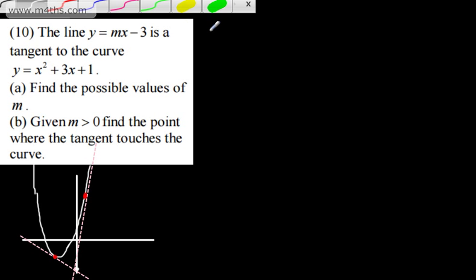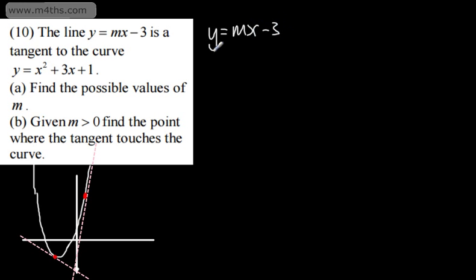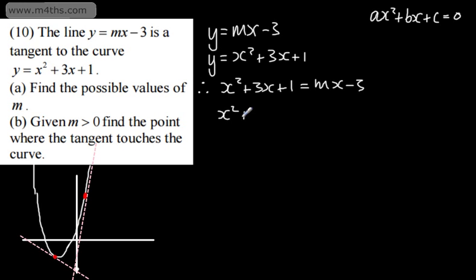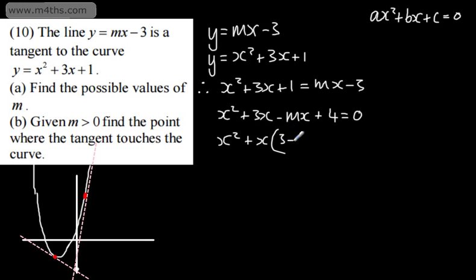I'm going to write y equals mx minus 3 and y equals x squared plus 3x plus 1. Therefore we can set these equal: x squared plus 3x plus 1 equals mx minus 3. I'm now going to get a quadratic equation in the form ax squared plus bx plus c equals 0. So I'm going to have x squared, plus 3x minus mx, then plus 4 equals 0. I can factor this: x squared plus x is common to both, which will give me 3 minus m.